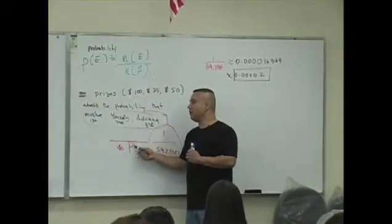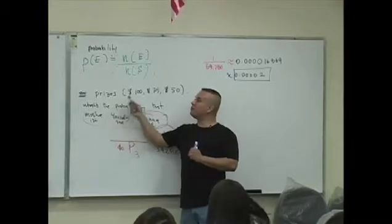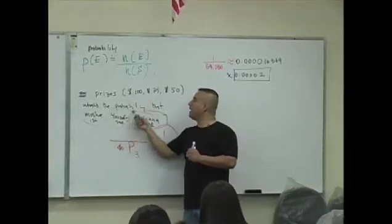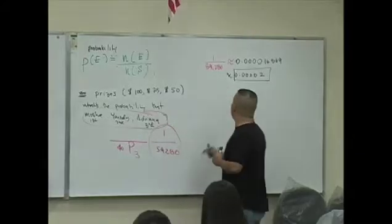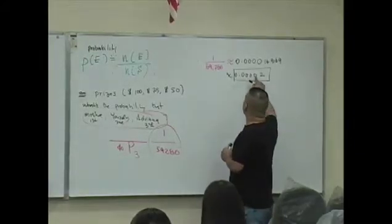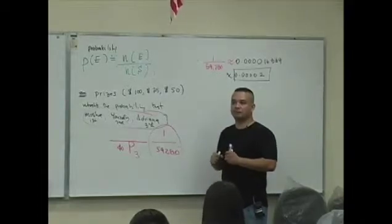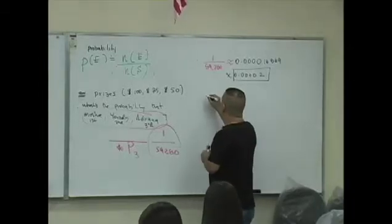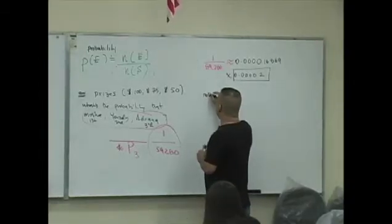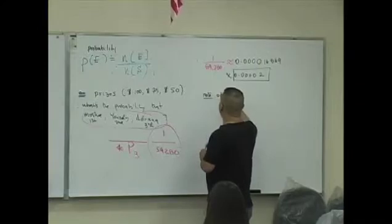Okay? So the probability that this occurs where Moshi wins first prize, which is 100 bucks, Yowzee wins second, which is 75, Adriana wins third, which is 50, that is going to be 0.00002. That's the likelihood that this happens.